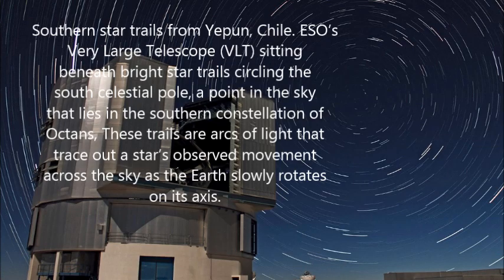These star trails from Yipun, Chile — ESO's Very Large Telescope sitting beneath the bright star trails circling around the South Celestial Pole, a point in the sky that lies in the southern constellation of Octans. These trails are arcs of light that trace around a star's observed movement across the sky as the Earth slowly rotates on its axis. This cannot happen on a flat Earth.